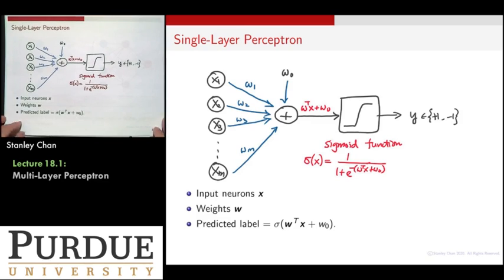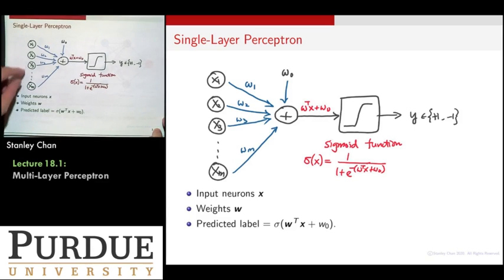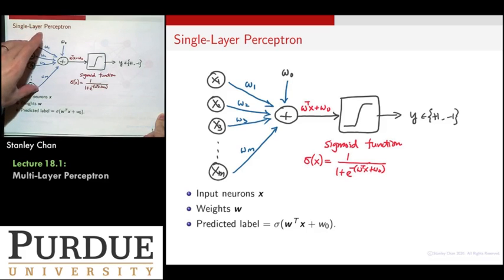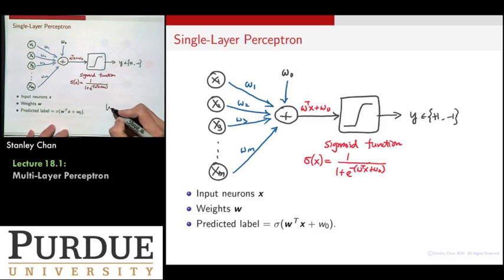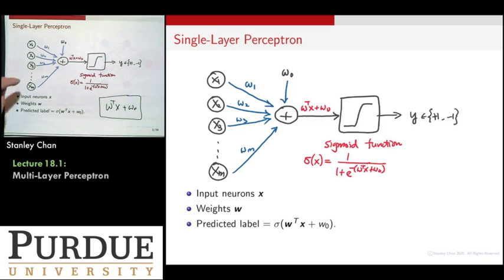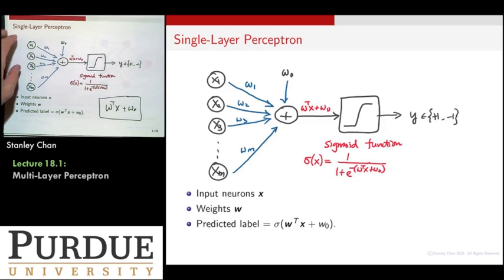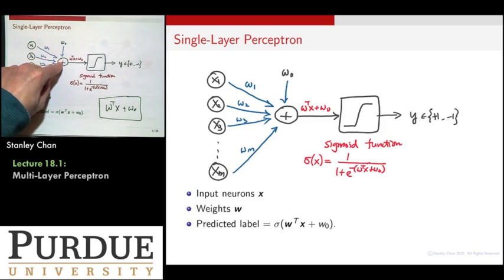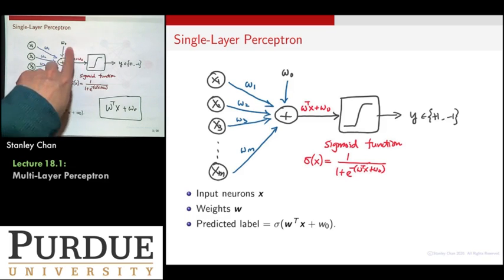Assume that you have a list of neurons — think of them as the input nodes or the input features. They are the input: it could be pixels, it could be speech magnitude, it could be some feature transform. It's an m-dimensional vector. You are going to take a weighted average by computing w transpose x plus w zero. This is a linear discriminant function. In this diagram, you form a weighted average: you multiply each node by a weight, sum them up, and of course there is also an offset term — the bias term. You add everything together and that gives you the discriminant function.